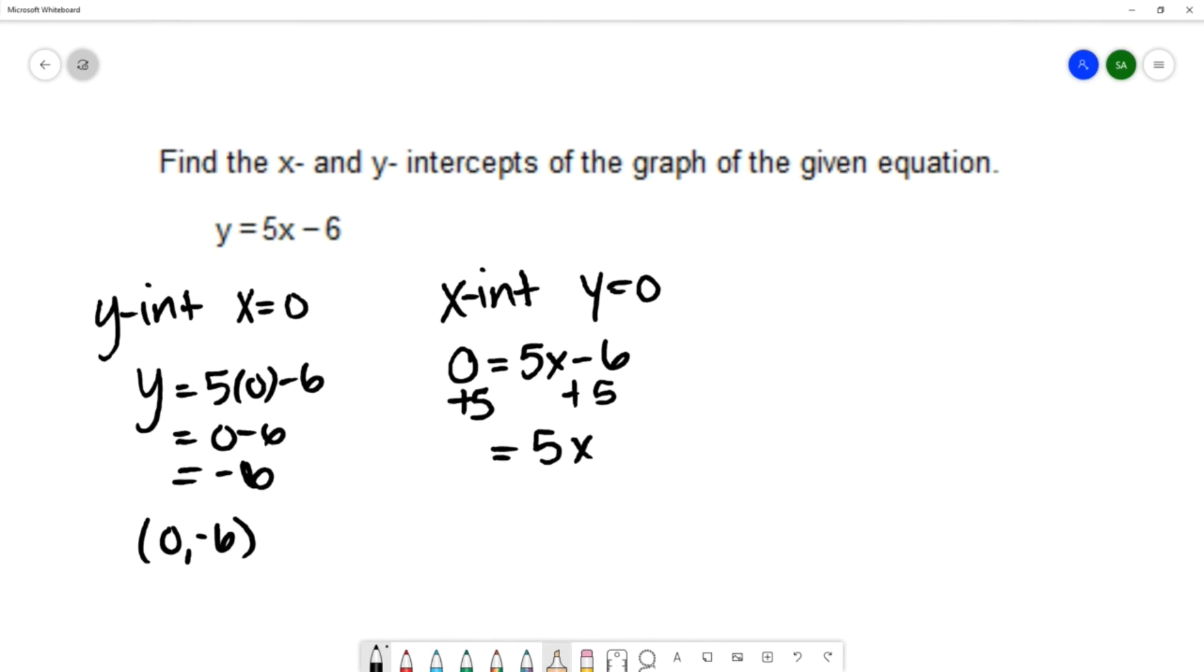Sorry, I would add 6 to both sides. That would give me 6 equals 5x because 0 plus 6 is 6. Negative 6 and positive 6 cancel, leaving 5x on the right-hand side. Then to continue solving for x, I would divide by 5 on both sides. That gives me x equals 6/5. So the x intercept would be the ordered pair (6/5, 0).